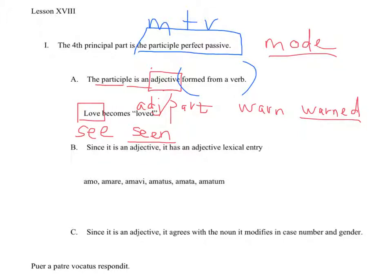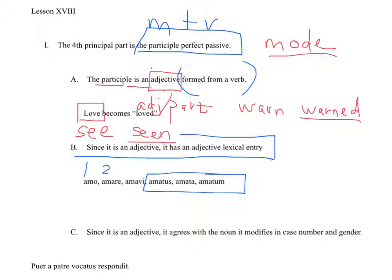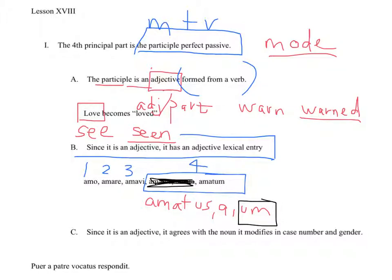The participle perfect passive is translated like the examples given: loved, warned, or seen. Since it's an adjective, the participle perfect passive has an adjectival lexical entry. Here's what I mean by the fourth principal part — here's the first, the second, the third, and the dictionary entry. A good proper dictionary wouldn't abbreviate and would just have amatus, amata, amatum. All dictionaries always abbreviate though — they just put something like amatus, amata, amatum. Some textbooks just pick the neuter form amatum. Remember that amatum is the neuter form. You have masculine, feminine, and neuter, just like any other adjective — masculine first, feminine second, neuter third.